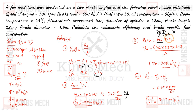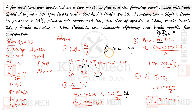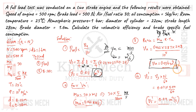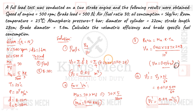Checking units: kilogram cancels kilogram. Joule per second is Newton·meter per second. Pressure unit is Newton per meter squared. Volume unit has Newton cancel. This gives meter cubed divided by second, i.e., meter cubed per second. So VA has unit of meter cubed per second, and VS must also be in meter cubed per second for the ratio to be valid.